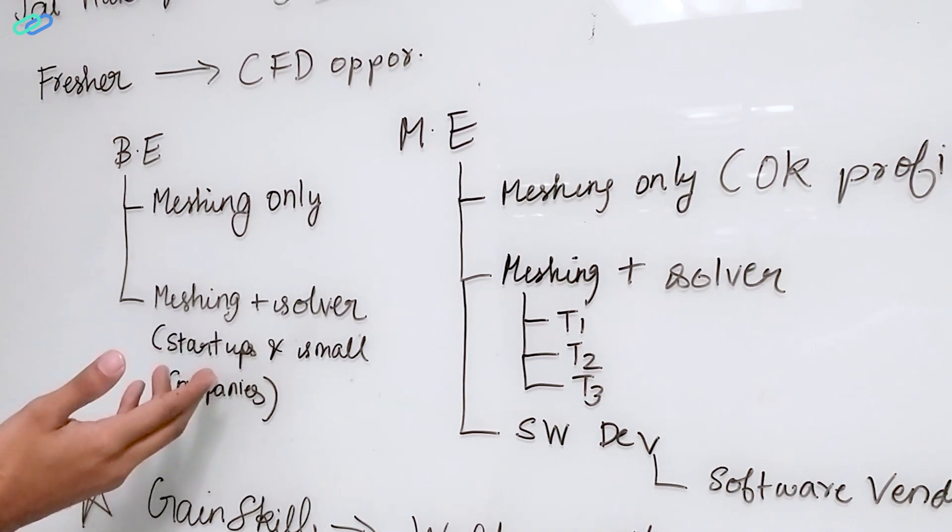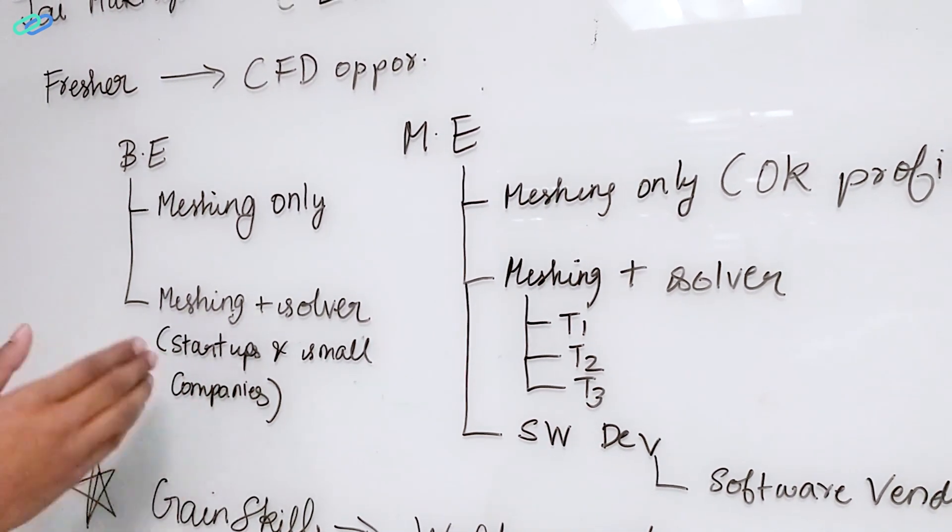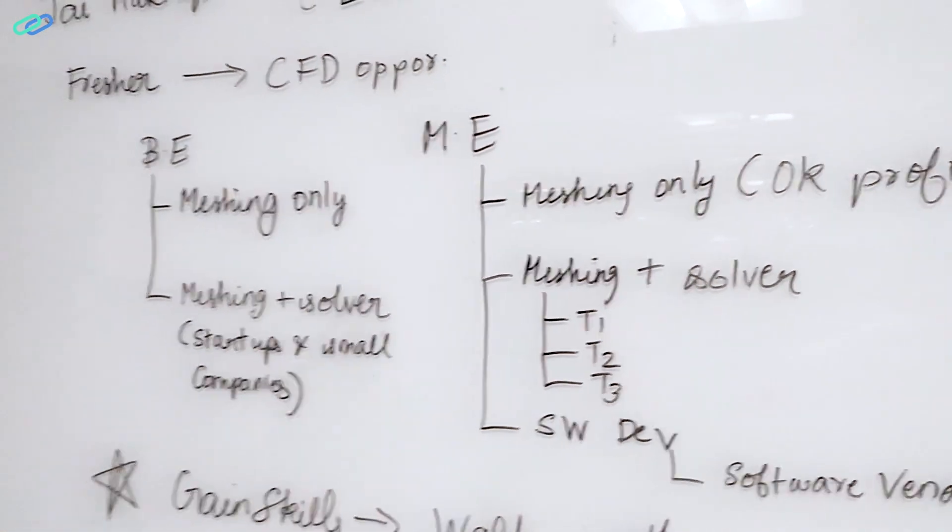If you have a decent GPA, you can still go for startups and small companies. The thing with small companies is they don't have strict rules like requiring an M-Tech or ME degree to do CFD. Small companies don't have strict rules, but they do have a strict interview process. So if you're able to clear the interview and show them you have a good profile, they would still take you.